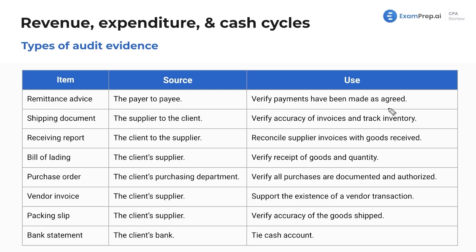If you want additional clarification on these pieces of audit evidence, definitely go check out the audit evidence lesson. We want to be efficient here and not mention something 15 times in depth — this is just a nice overview to remind you of what's going on. The shipping document's source is the supplier and it gets sent to the client.